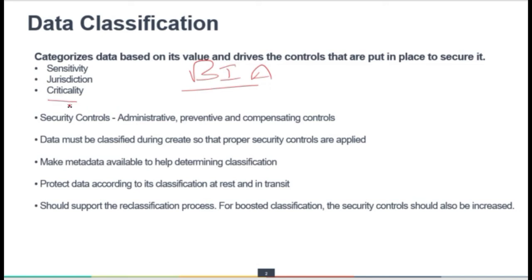Another aspect is the criticality of that data — it is more from the organization's survival perspective. For example, if any information could be disclosed, we analyze the impact of that disclosure, and based on that we define the security controls and define the classification of that information.